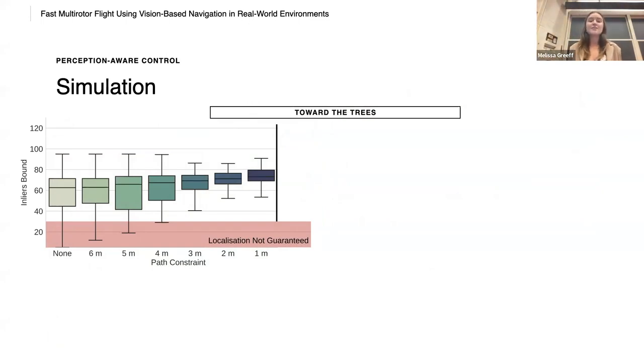And we compare the path under different constraints in the controller. So no path error constraint, none. A fixed path error constraint of six meters, five meters, four meters, three meters, two meters, and one meter. And what we see is that at a fixed path error constraint of three meters, we can guarantee localization. And then we also compare our perception aware constraint, PA. The first thing that we see is that we don't need to fly under different fixed path error constraints to ensure localizability as it's explicitly accounted for.